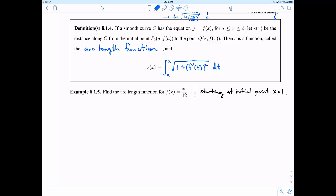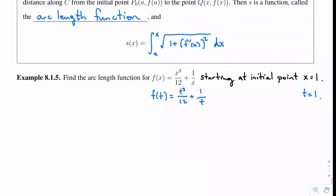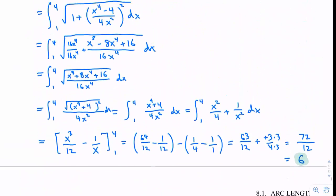Let's try to use this then to figure out the arc length function. Notice that this is a problem that we've already solved, but now we're starting at an initial point of x equals one and we're finding the arc length function. First of all, let me write down f of t because we're going to want to integrate with respect to t here. f of t is going to look a lot like f of x but just swap in some t's instead of x's.